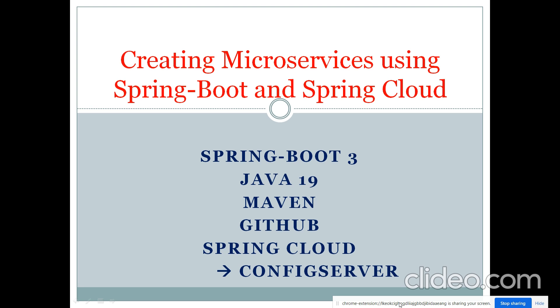Before we start this application, what are the things we require? Spring Boot 3 — we're dealing with Spring Boot 3 here — Java 19, Maven 3 or the latest version available, a GitHub repository where we need to push our code, and Spring Cloud with the Config Server. These are the concepts I'm going to cover in this microservice creation today. We'll move on to the coding part.